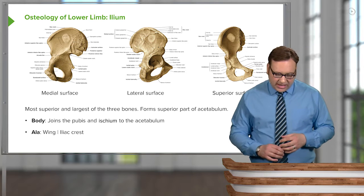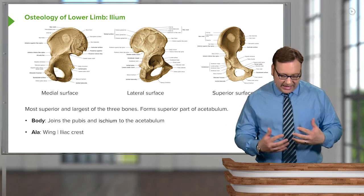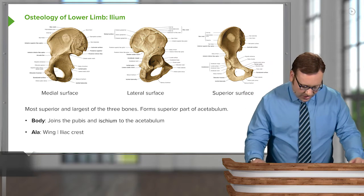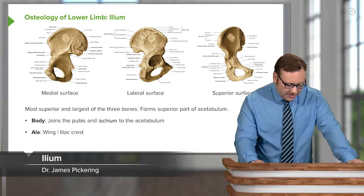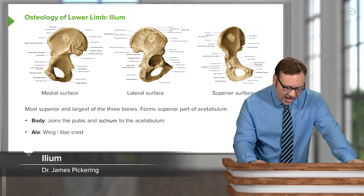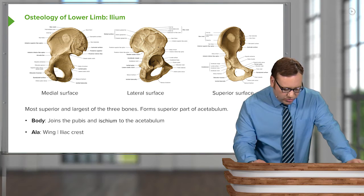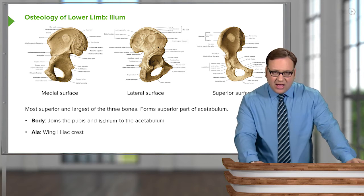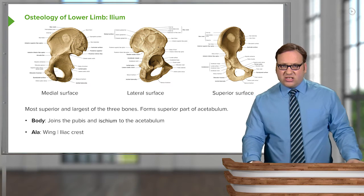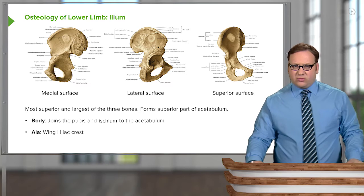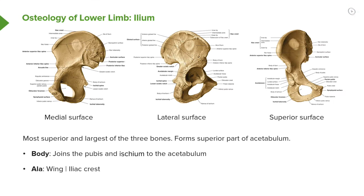Let's start by looking at the ileum. We can see the ileum is this large wing-shaped bone. It's the most superior and largest of the three bones, and it forms the superior part of the acetabulum.